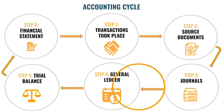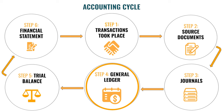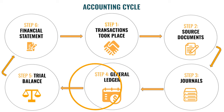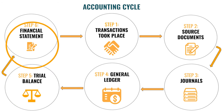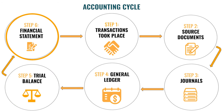Step 4: The journal should then be closed off and posted in the General Ledger. Step 5: It should then be posted into the Trial Balance. Step 6, the last step: This is where the Financial Statements — which has two components, the Income Statement and the Balance Sheet — should then be drawn up.